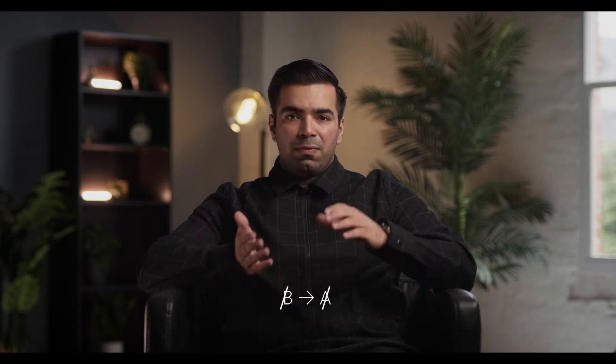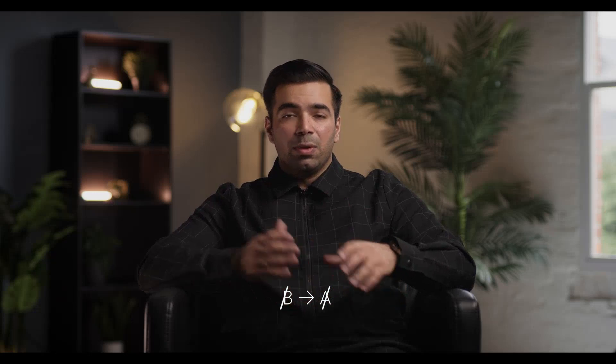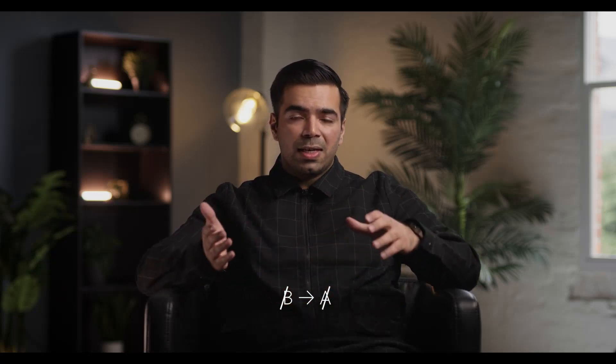Let's say our conditional statement says: if A, then B. If you have A, then you have B. The contrapositive of this would be — we flip the whole thing — if we don't have B, we don't have A. What we just did is flip the whole conditional statement and negate both sides. That's pretty much the contrapositive.